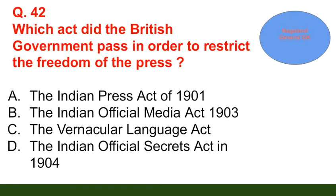Question number 42: Which act did the British government pass in order to restrict the freedom of the press? Option A: the Indian Press Act of 1901; option B: the Indian Official Media Act 1903; option C: the Vernacular Language Act; option D: the Indian Official Secrets Act of 1904.